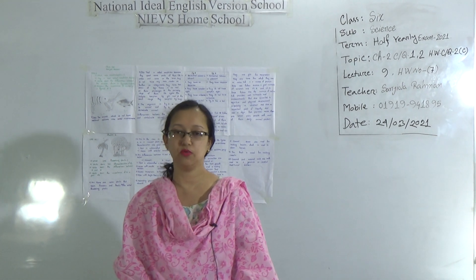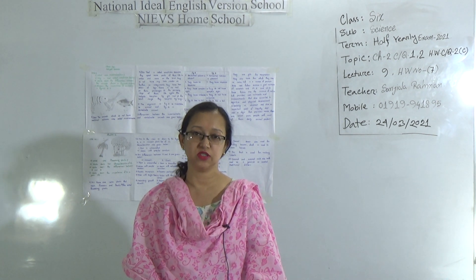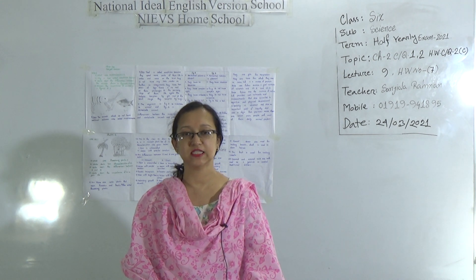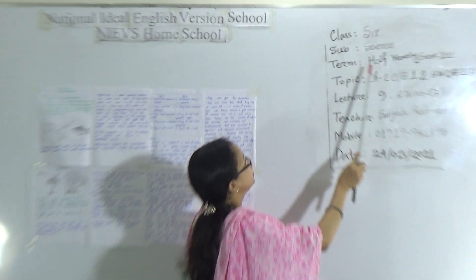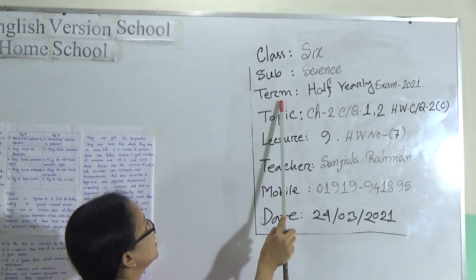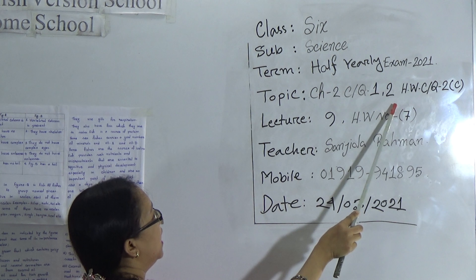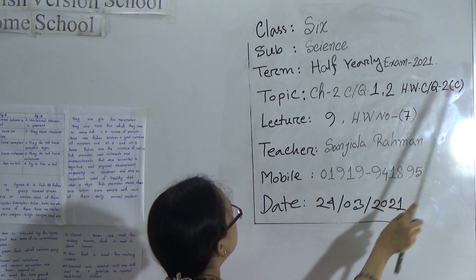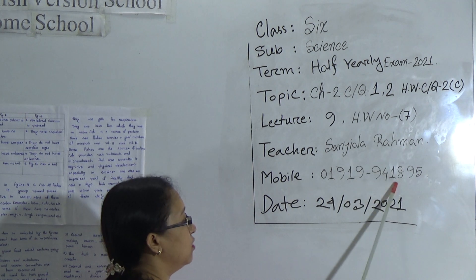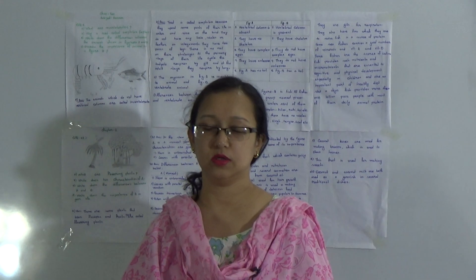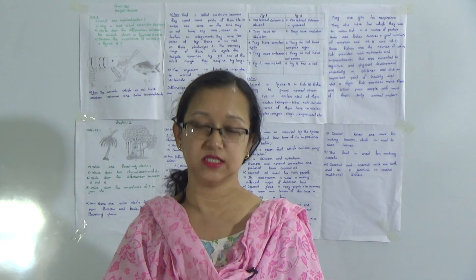Assalamu Alaikum, my dear students. Hope you are all well. Today I am Shanjida, human assistant teacher of National Ideal English Version School Deshi. I am going to take a science class for Class 6. Our lecture number is 9, subject: Science, term: Half Yearly Exam 2021, topic: Chapter 2, CQ1 and CQ2. Contact me if you need any help. Now we will discuss creative questions 1 and 2.